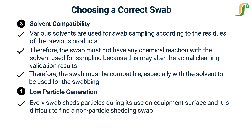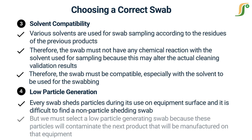Fourth is low particle generation. Every swab sheds particles during its use on an equipment surface, and it is difficult to find a non-particle-shedding swab. We must select a low particle generating swab, because these particles will contaminate the next product that will be manufactured on that equipment.